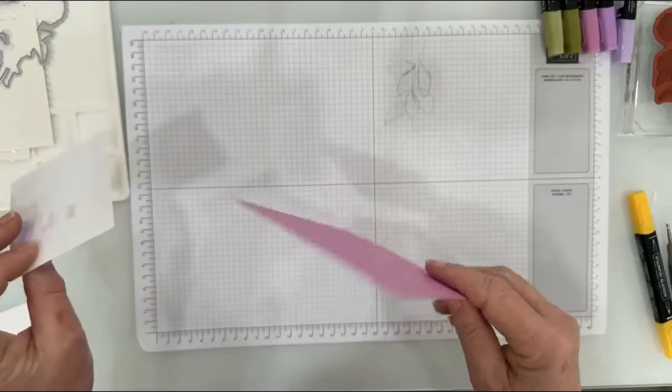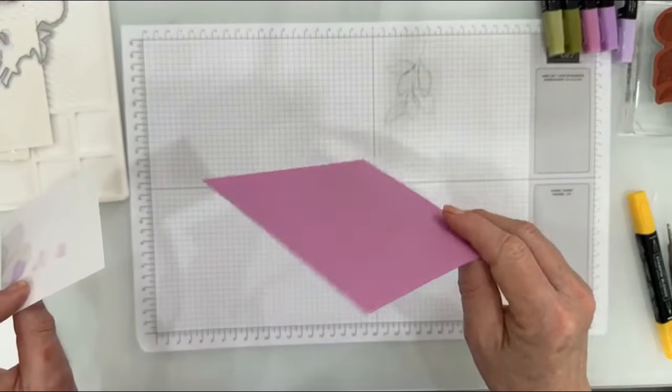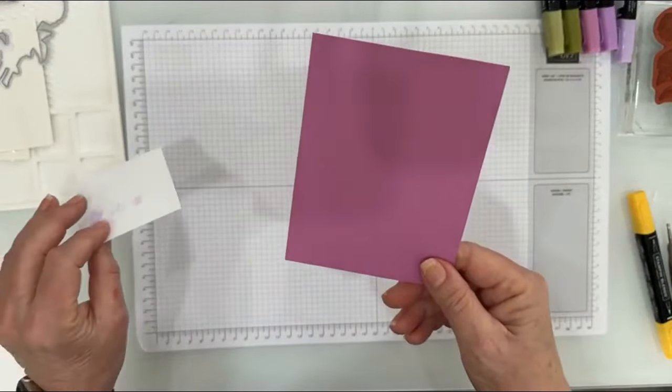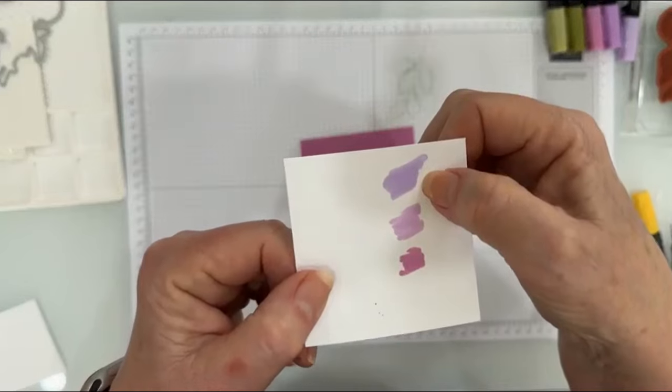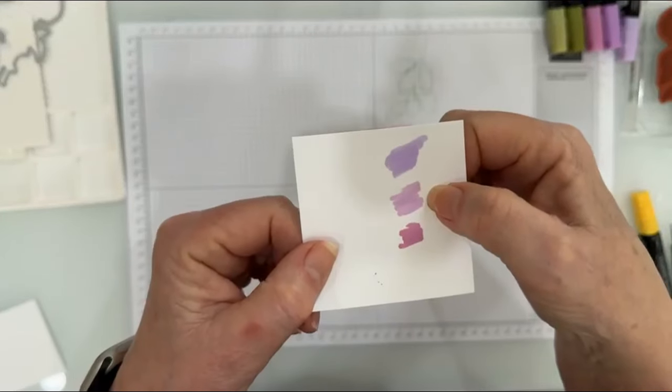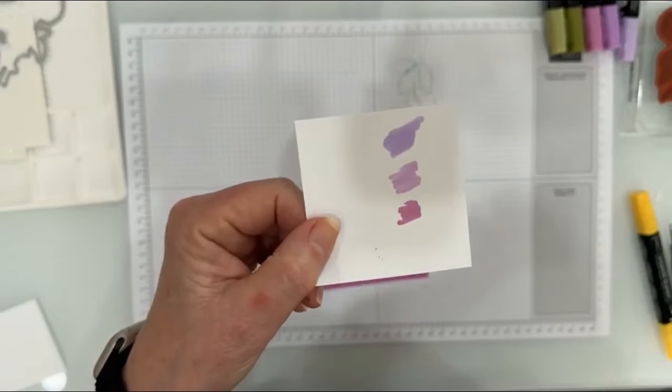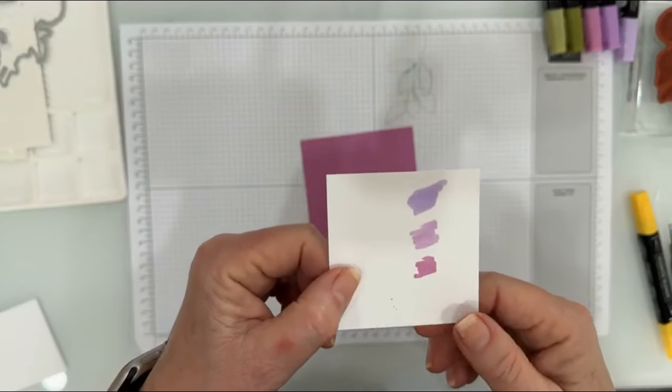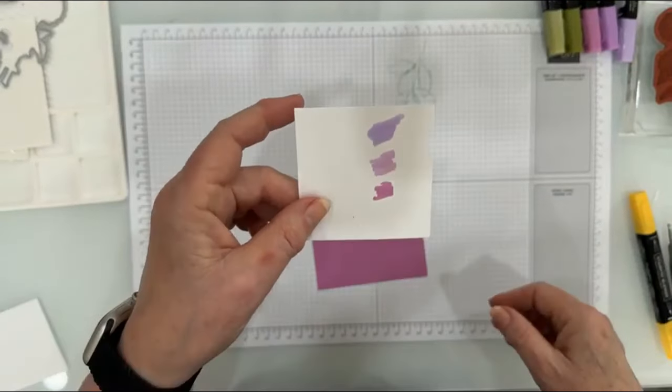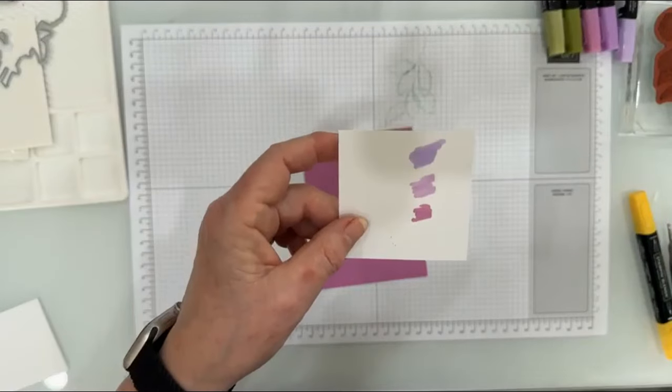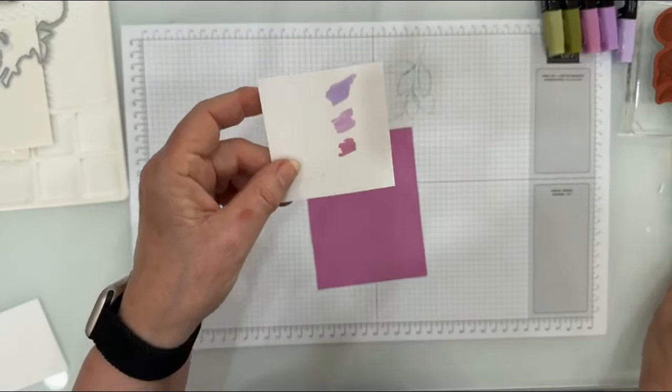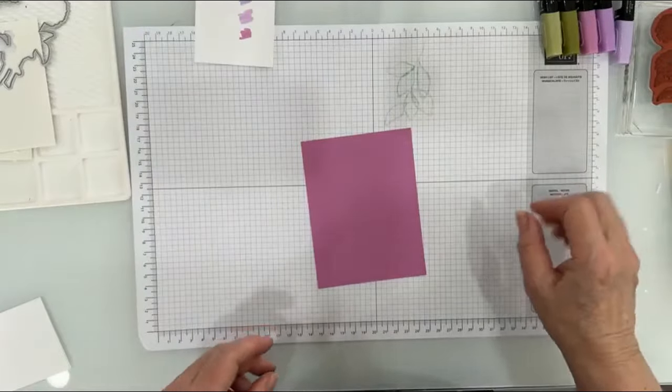I am Debbie Chronister, an independent Stampin' Up! demonstrator, and this morning we're going to look at another of the in colors. We're going to look at Petunia Pop, and it is this beautiful color - it's not Highland Heather. Let me show you. Highland Heather is here, Fresh Freesia is here, and this is Petunia Pop. So it's a little bit more red.